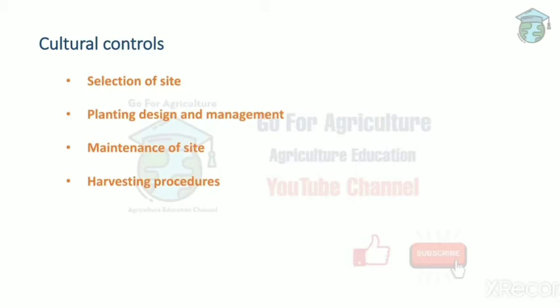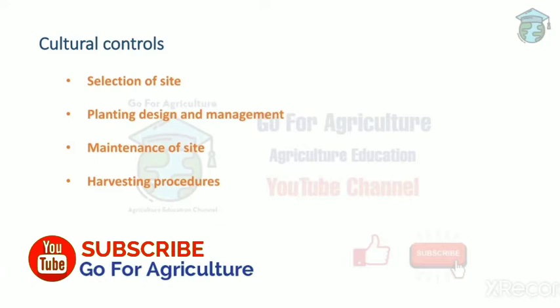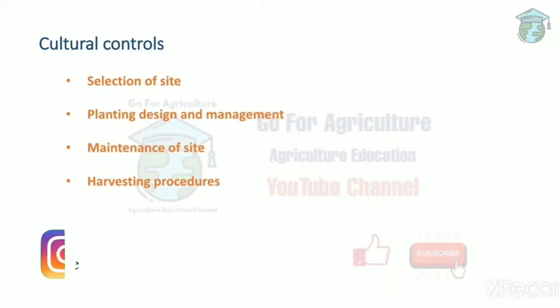Now we are going to study cultural control under four topics: selection of site, planting design and management, maintenance of site, and harvesting procedures. Selection of site means, in order to cultivate the crop, we have to select the land, and we should consider certain things during that selection.